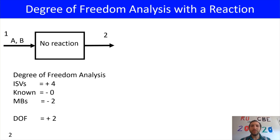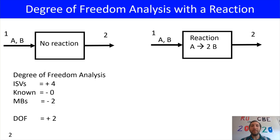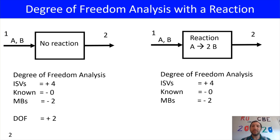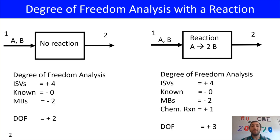Now, if I approach this system again, but now instead of having no reaction in my unit, I have a reaction, we can again do a degree of freedom analysis. We again have four ISVs, zero knowns, and two material balances for A and B. But now, because I have a chemical reaction, I have to add another part to my degree of freedom analysis. For every chemical reaction I have, I'm going to add one degree of freedom — giving me three degrees of freedom total.